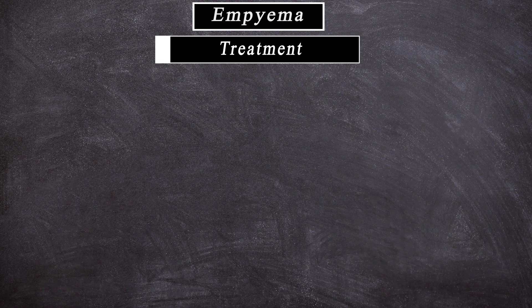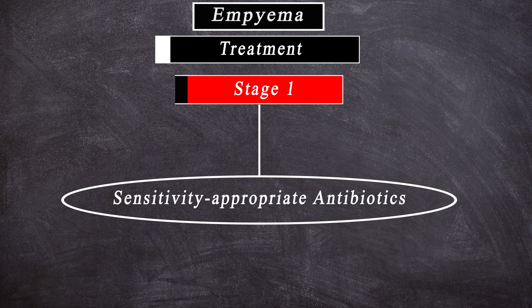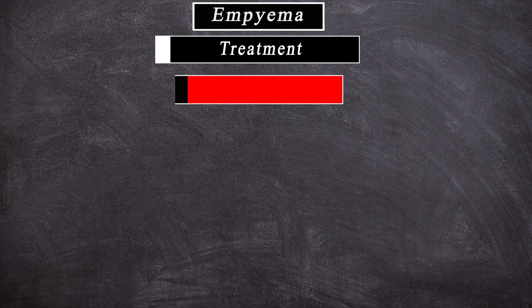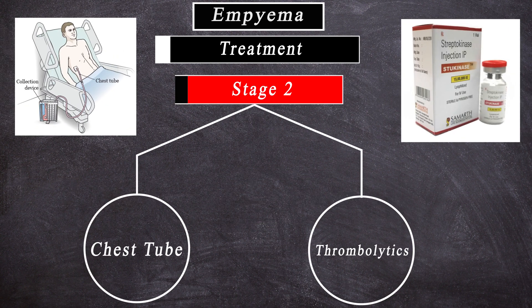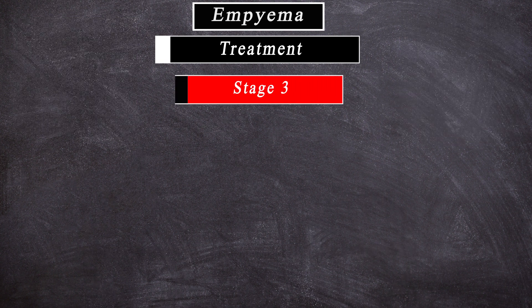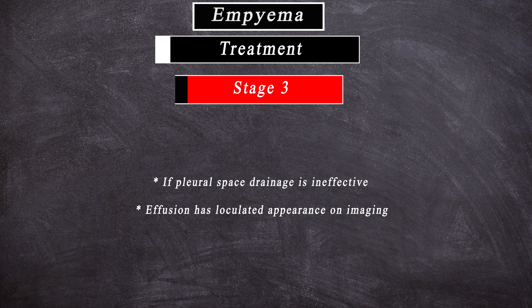Treatment: Stage 1 requires sensitivity-appropriate antibiotics. Stage 2 requires chest tube drainage. Thrombolytics are most likely to be effective during the early stage of Empyema and should be reserved for patients who are poor surgical candidates. Stage 3 and failure of Stage 2 to resolve: if pleural space drainage is ineffective or the effusion has a loculated appearance on imaging, VATS decortication should be performed without delay.